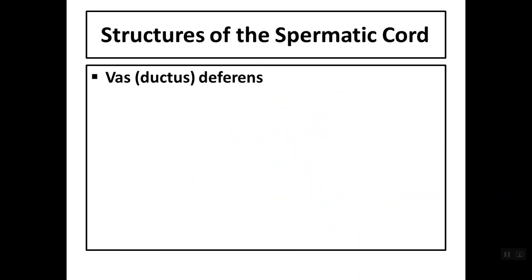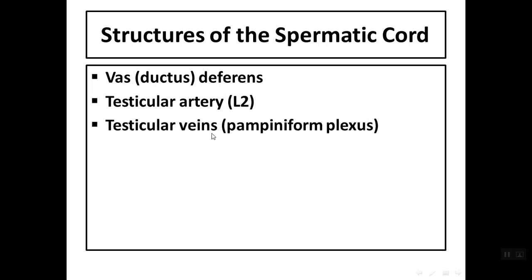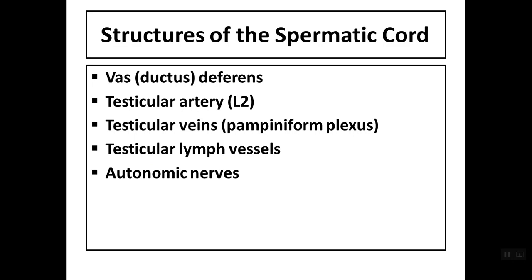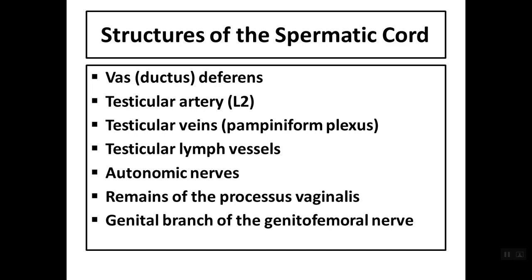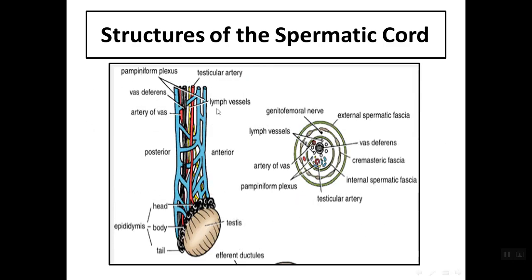The structures passing through the spermatic cord are: first, the vas deferens or ductus deferens; the testicular artery, arising from the abdominal aorta at the level of L2; the testicular veins forming the pampiniform plexus; testicular lymph vessels draining lymph from the testis and epididymis up to the para-aortic lymph nodes in the abdomen; autonomic nerves; remains of the processus vaginalis; and the genital branch of the genitofemoral nerve supplying the cremasteric muscle.